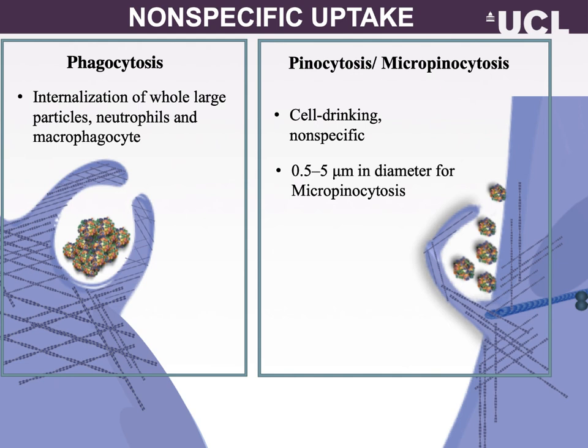Phagocytosis is a type of endocytosis that involves the uptake of large solid particles, often more than 0.5 mm in diameter. The particles may be aggregates of macromolecules, parts of other cells, or even whole microorganisms. In contrast to pinocytosis, phagocytosis has large proteins that specifically recognize and bind to the solid particles. In humans, phagocytosis is restricted to specialized cells called phagocytes, including white blood cells, neutrophils, and macrophages. Phagocytosis generates intracellular vesicles called phagosomes that transport sequestered solid particles to the lysosomes for digestion.